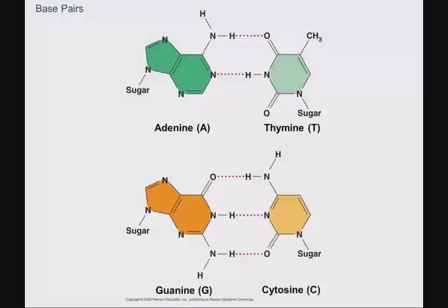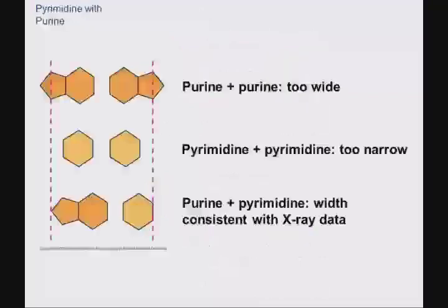When we look at the base pairs, A's and T's bond with two hydrogen bonds and G's and C's bond with three. Importantly, we always see a pyrimidine paired with a purine — the only way to maintain a consistent width of the double helix, and consistent with the x-ray data when exploring the structure of DNA on an atomic level.